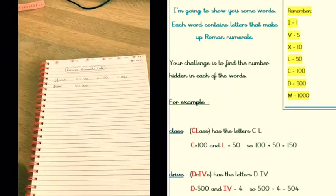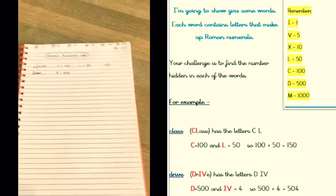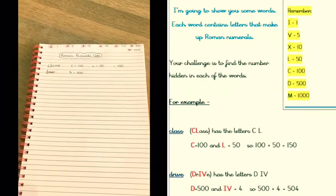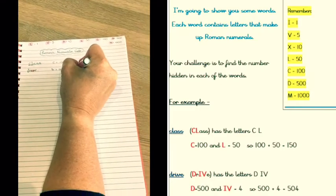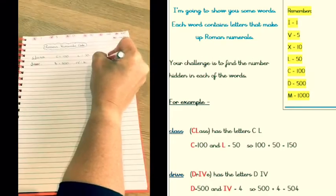When I comes before V, it's one less than five. So IV equals 4, and together with D, I get 504.